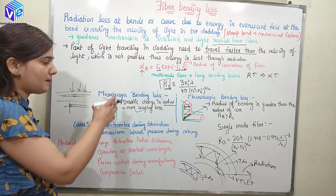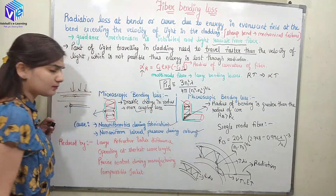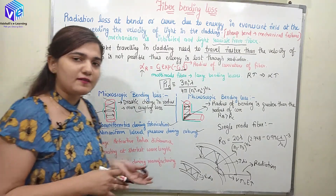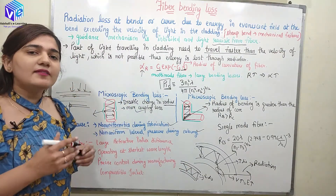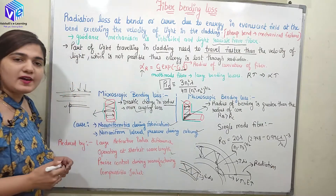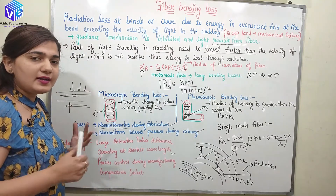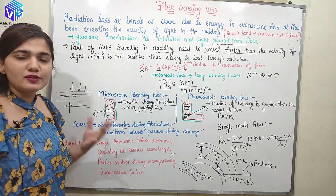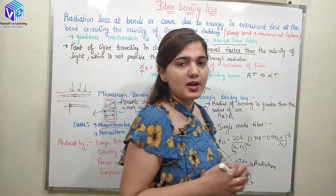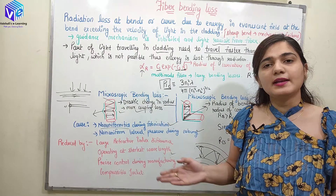Microscopic bending losses occur due to these reasons. To reduce micro bending losses: first, use a larger refractive index difference between the core and the cladding. Second, operate the optical fiber at the shortest possible wavelength to further reduce micro bending losses. Third, maintain better process control during manufacturing or fabrication to reduce microscopic bending losses. Fourth, use compressible jackets which reduce the lateral pressure on the optical fiber when cabling.